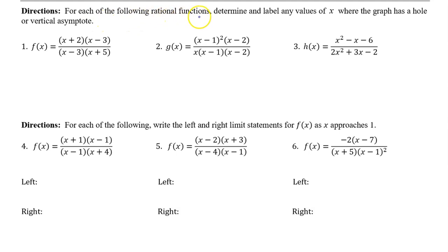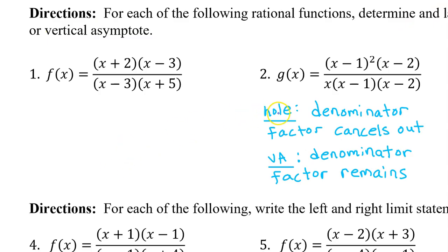For each of the following rational functions, determine and label any values of x where the graph has a hole or a vertical asymptote. A rational function will have a hole if a denominator factor cancels out, and it will have a vertical asymptote if a denominator factor remains. So either way, we focus on the denominator.